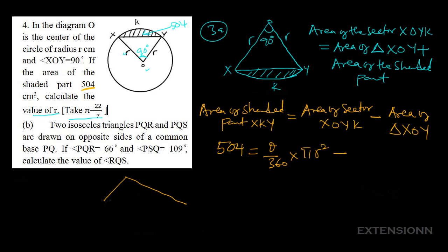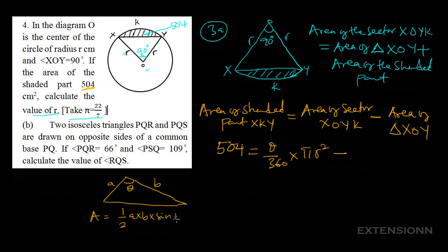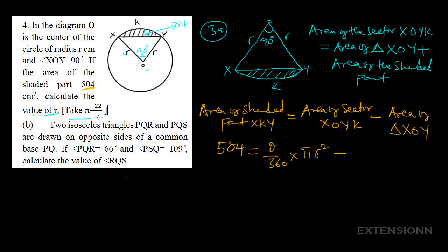For the area of the triangle, if you have a triangle with an angle in between and sides AB, the area is not half breadth times height. Instead it will be half times A times B times sine theta. We will use the same method here. The area of the sector is theta over 360 times pi R squared.